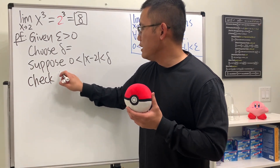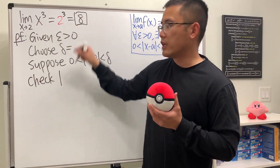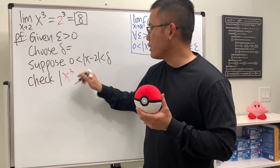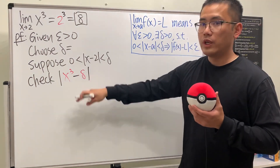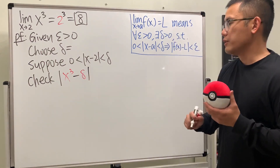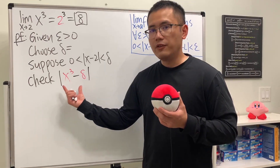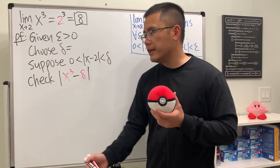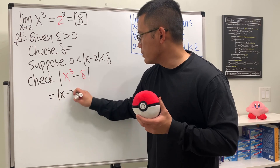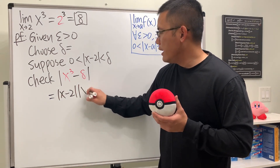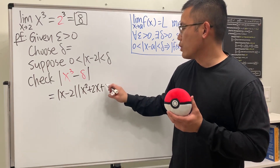We check the absolute value of the function minus the limit, which is absolute value of x cubed minus 8. We do some algebra — this is a difference of two cubes, so we can factor it. We get x minus 2 times the absolute value of x squared plus 2x plus 2 squared, which is 4.